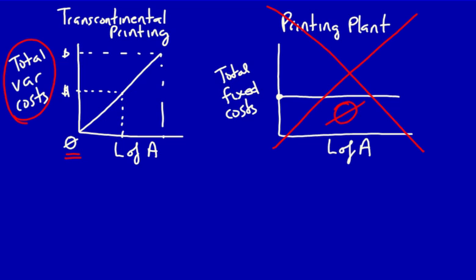Previously, when they had fixed costs, they would have been stuck with continuing to pay those fixed costs regardless of the number of newspapers produced. Torstar had reduced their risk by converting a mixed cost into a pure variable cost. It reduced their risk because if there was a reduction in the number of newspapers printed and sold, the total cost to print those newspapers would also reduce. There are no further fixed costs paid regardless of the level of activity.